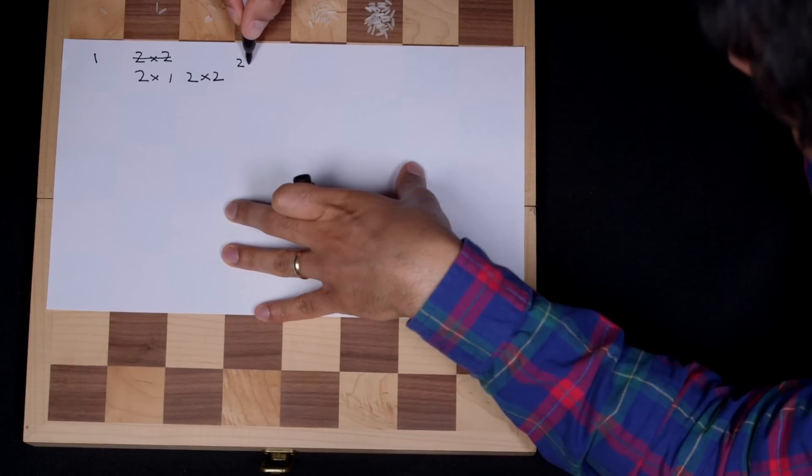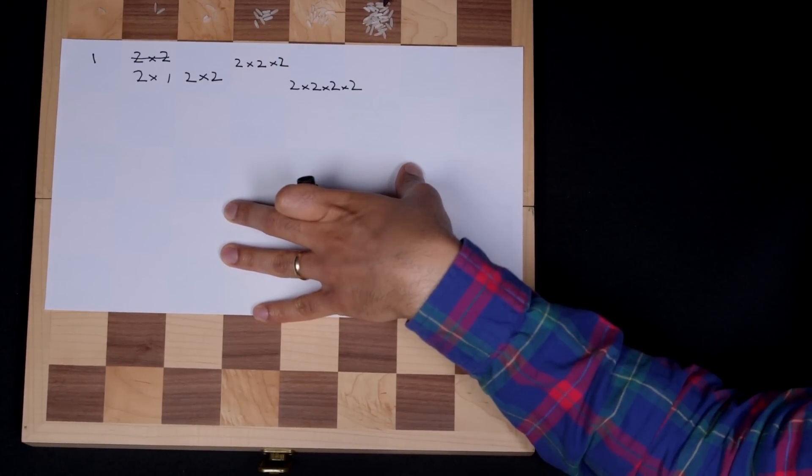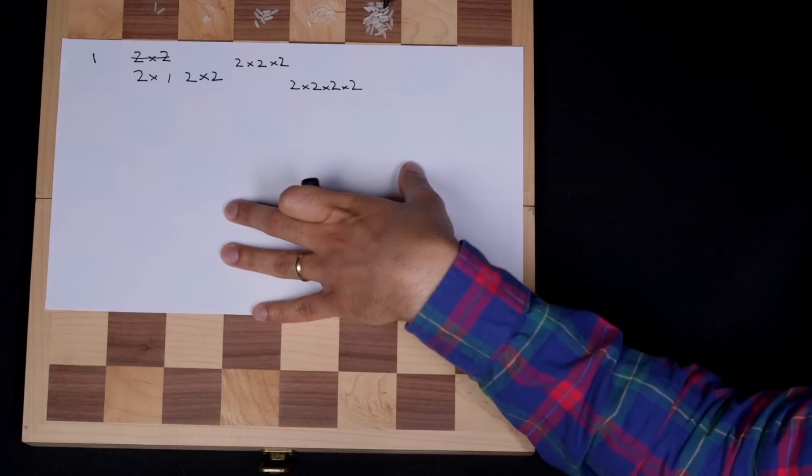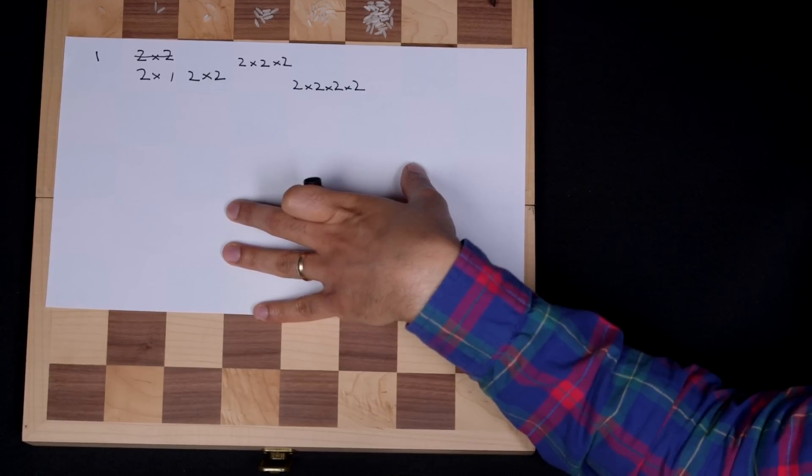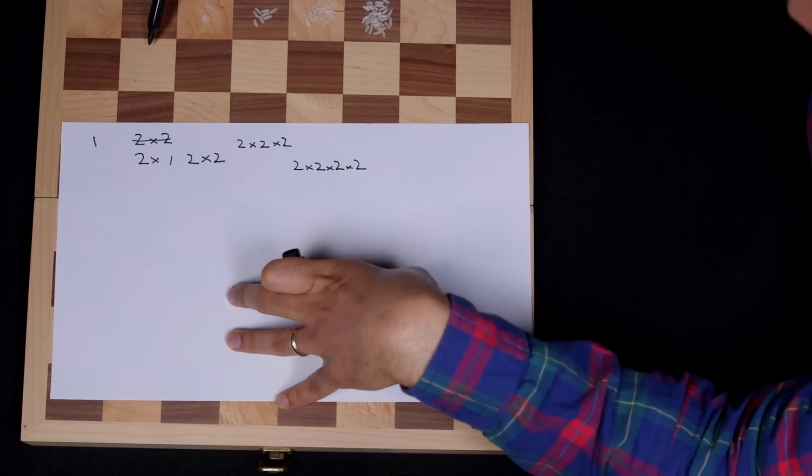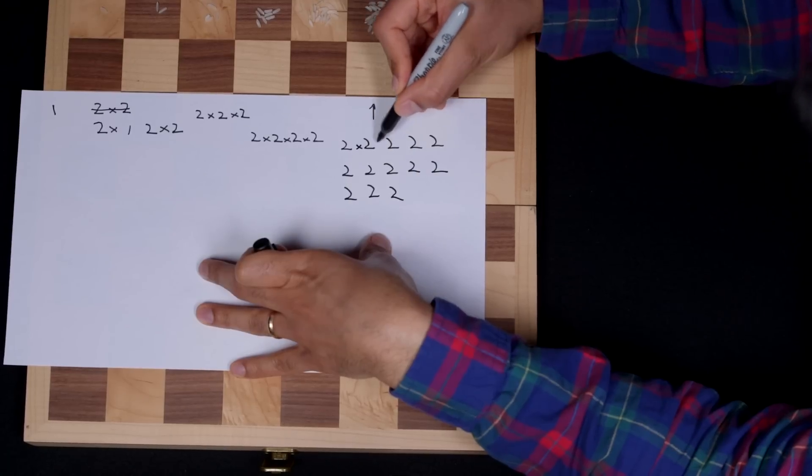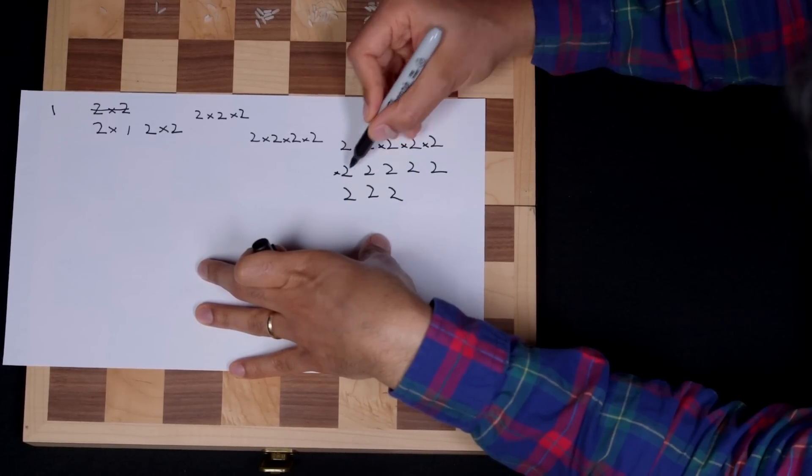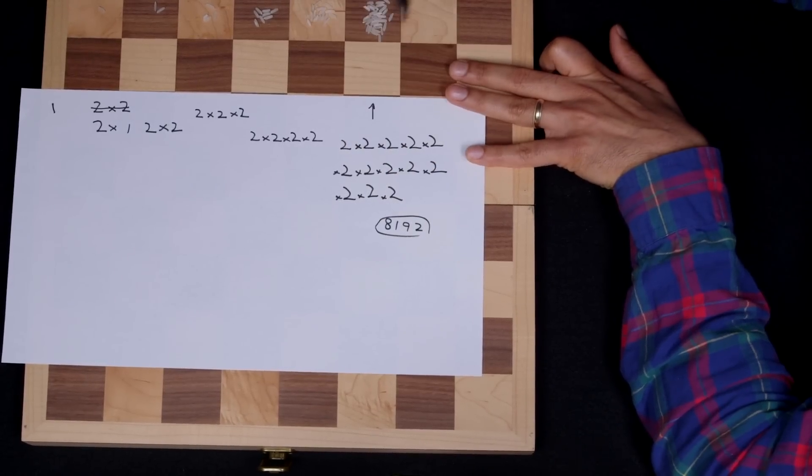So this is two times two. I'm trying to write sideways. Times two. So this one is going to be five twos multiplied together. This is going to be six twos multiplied together. This is going to be seven twos multiplied together. Eight twos multiplied together. So nine twos, 10, 11, 12, 13. So two, all of this stuff multiplied together.